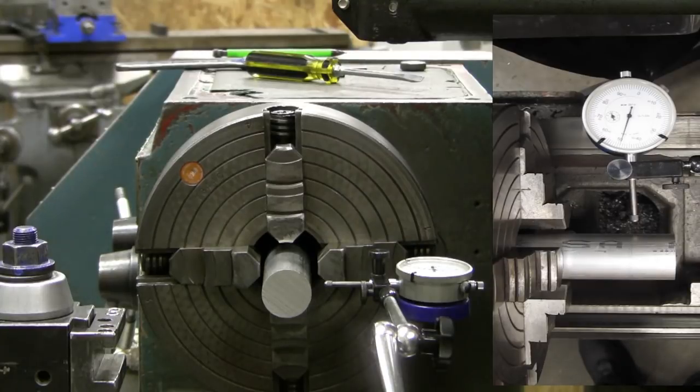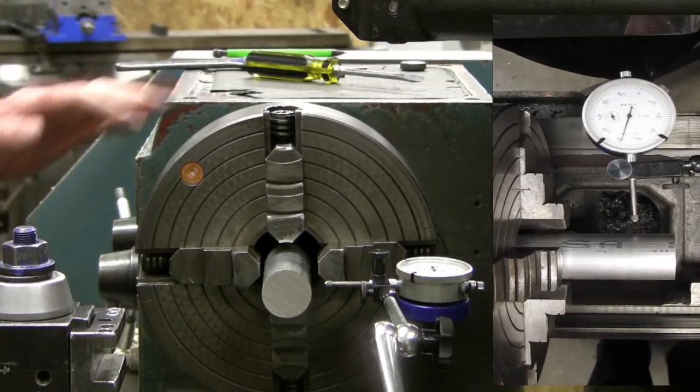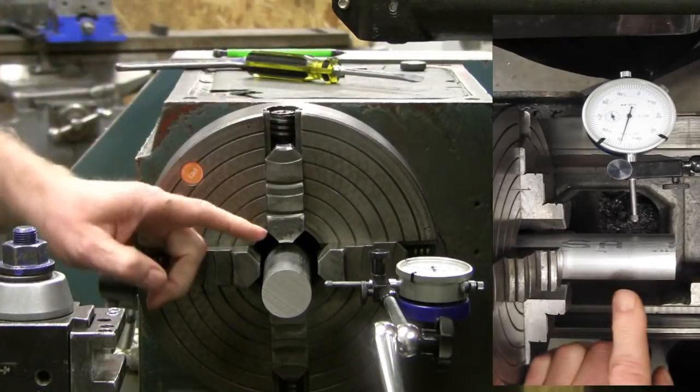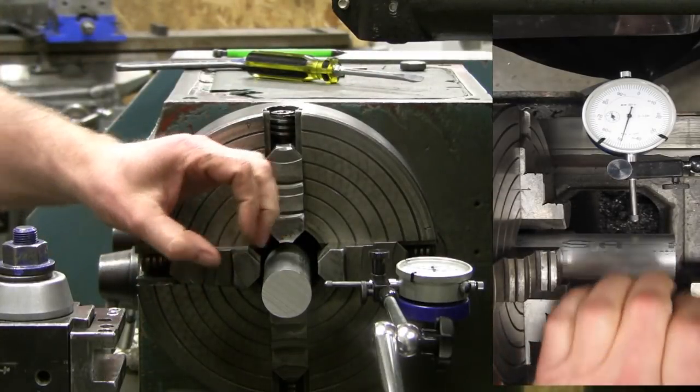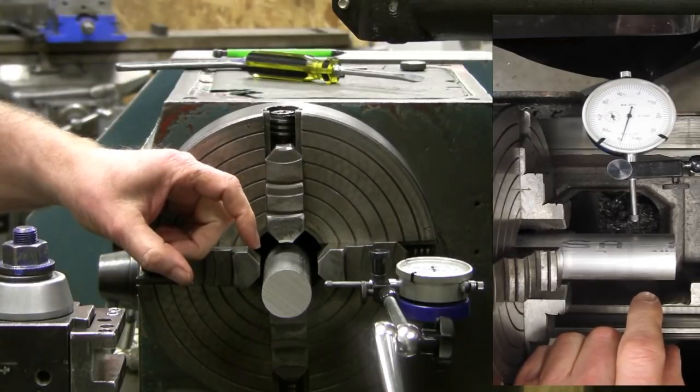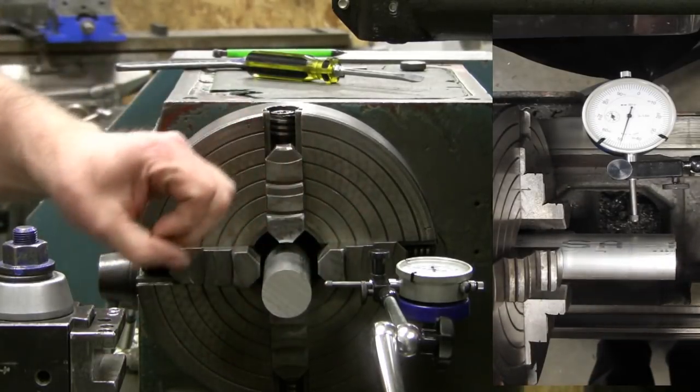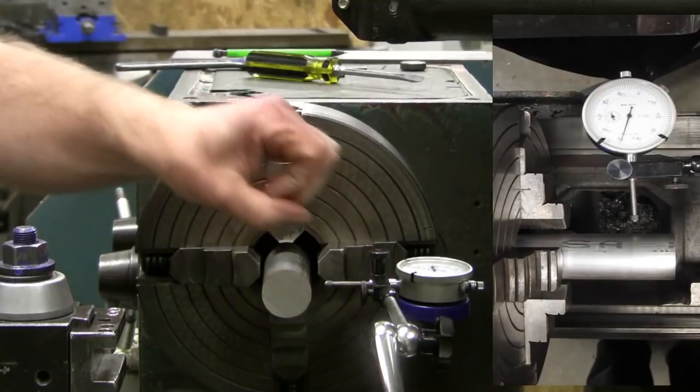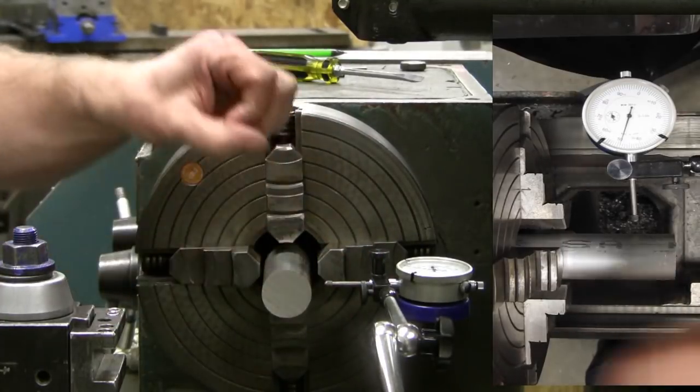This will be a demonstration of dialing in a four-jaw chuck. The goal is that as the chuck rotates, the part will not run out more than one thousandth of an inch. Run out is the same as wobble. If the part runs out like this, that wobbles. A machinist calls that run out.